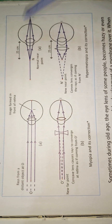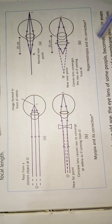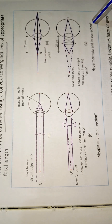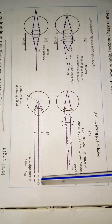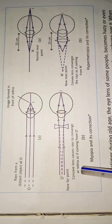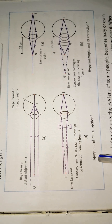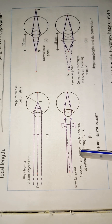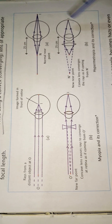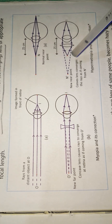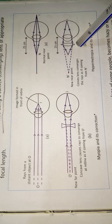This defect can be corrected using a convex lens of appropriate focal length. Here is the ray diagram of myopia and its correction, and hypermetropia and its correction. In myopia, rays from a distant object form an image in front of the retina, and this defect is corrected by using a concave lens of appropriate focal length. Hypermetropia is corrected by a convex lens of appropriate focal length.